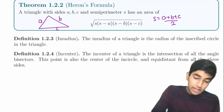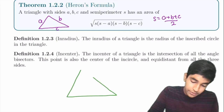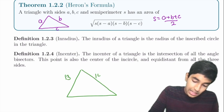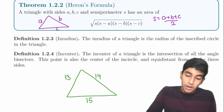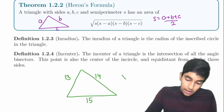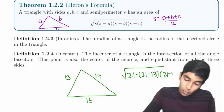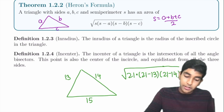For example, if we have a triangle with side lengths 13, 14, 15, the semi-perimeter is 21, because (13 + 14 + 15) / 2 = 21. So the area is √(21 × (21−13) × (21−14) × (21−15)), and then you can simplify.